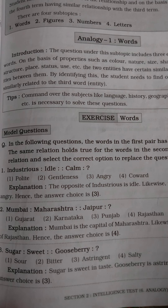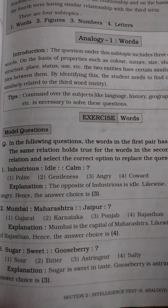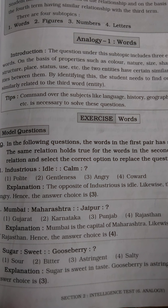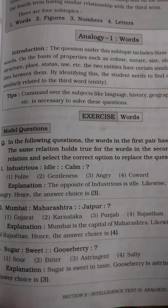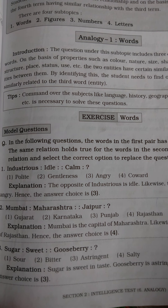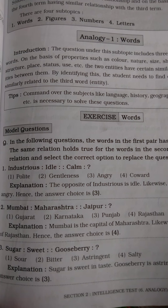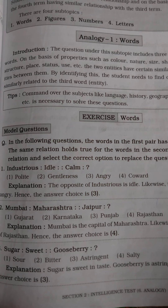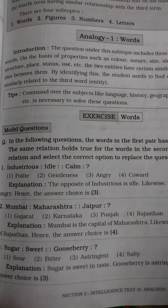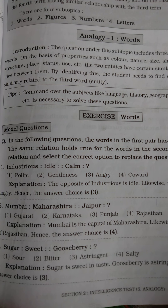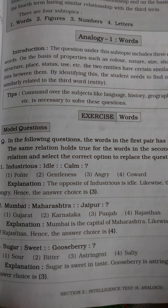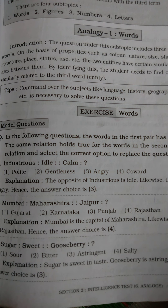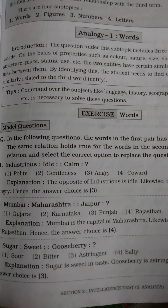The first question is: find out the relationship. Given: Industrious : Idle :: Calm : ? There are three entities given and students have to find out the fourth one. Industrious means who is working all the time, and idle means who is not working, or who is lazy. Idle is the opposite word of industrious. So we have found the relationship — industrious and idle are opposite words. We have to find out the opposite word of calm.